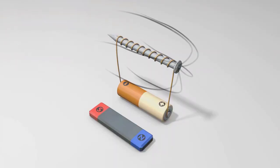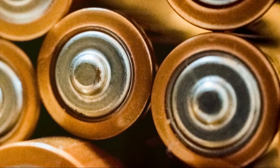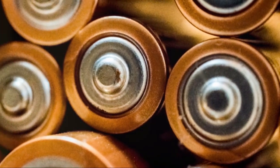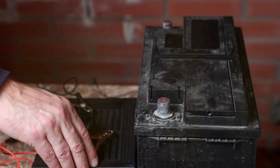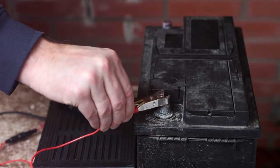So how do we get electrons moving? We need an outside force like voltage. Connect a battery, and the negative terminal repels electrons, while the positive terminal attracts them, creating a push-and-pull effect.